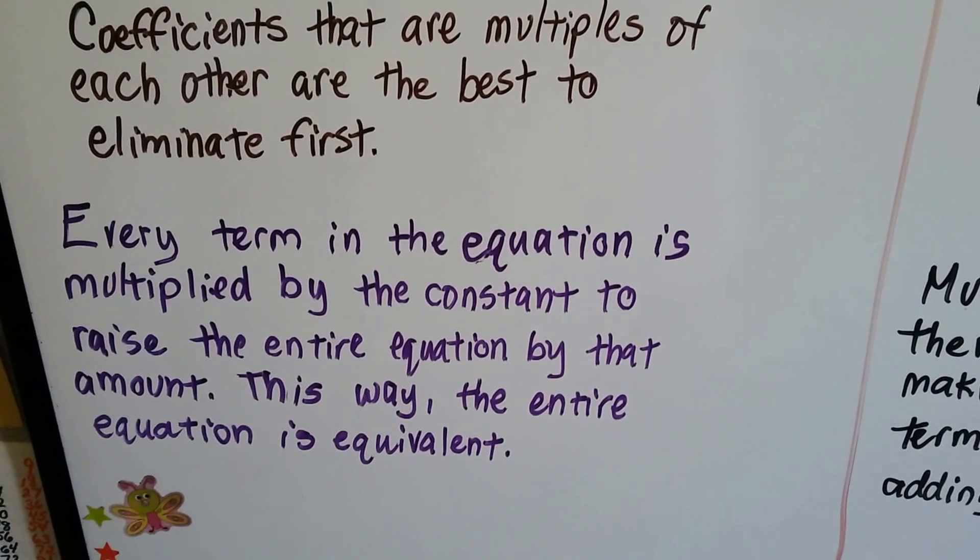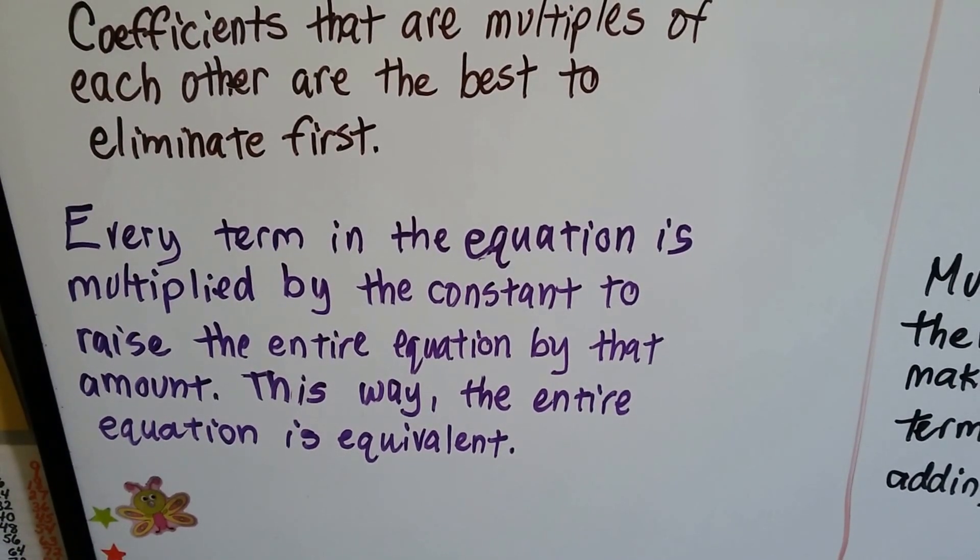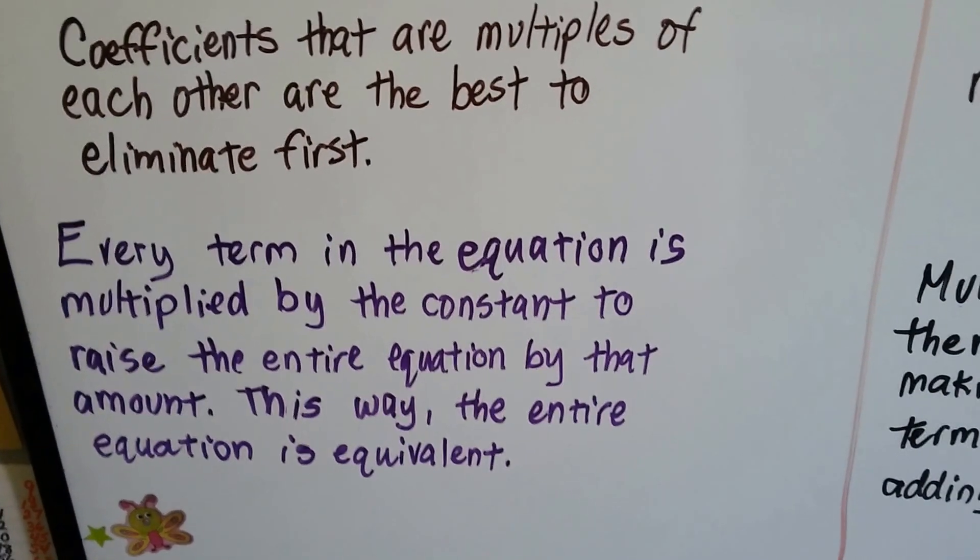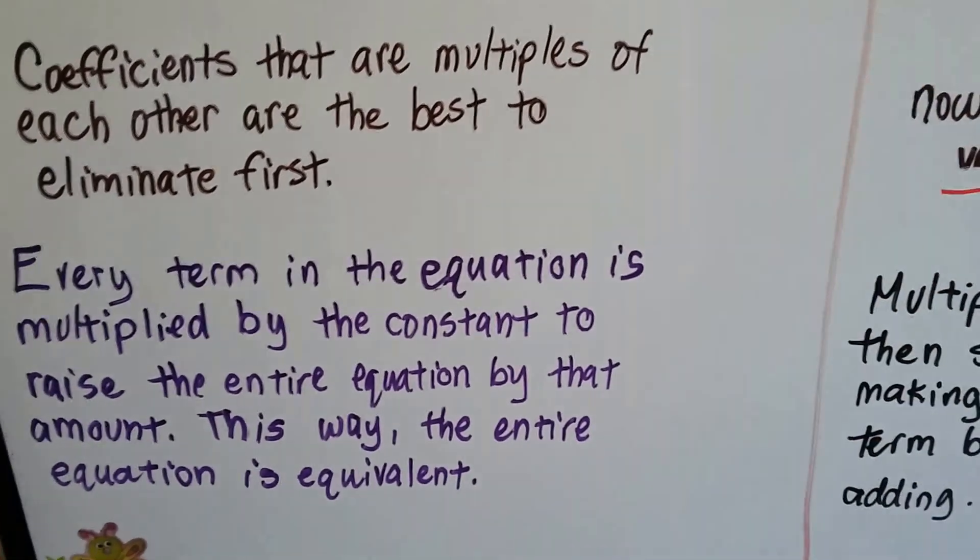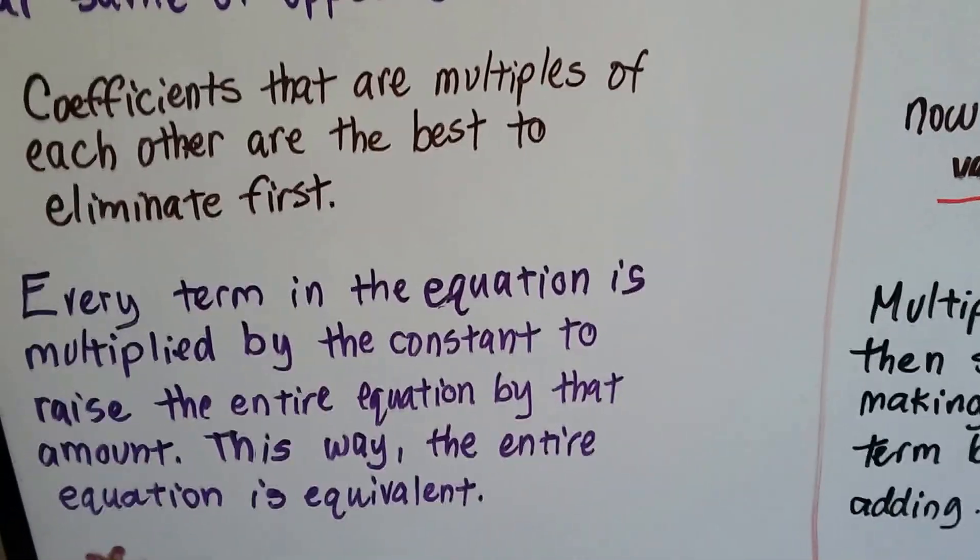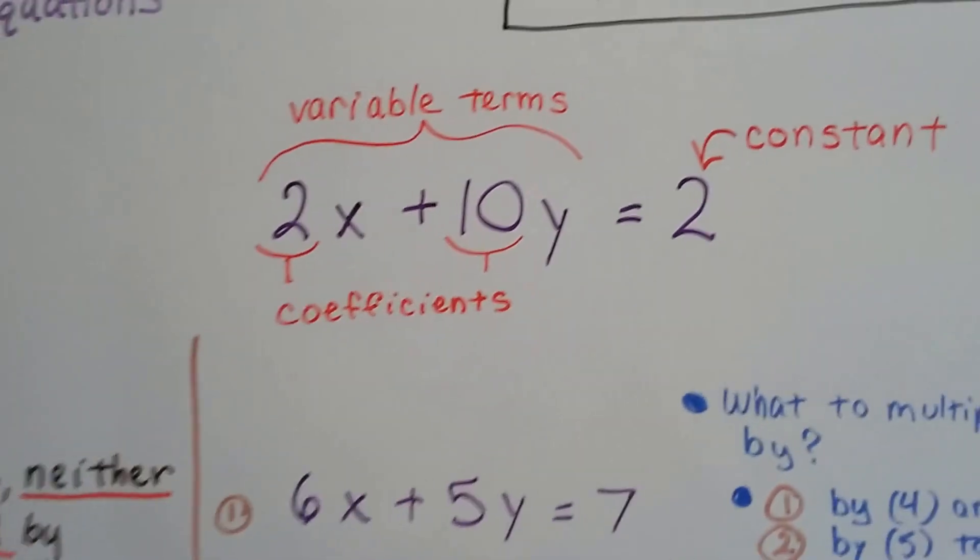Every term in the equation is multiplied by the constant to raise the entire equation by that amount. That way, the entire equation is raised an equivalent. So, recap real quick.